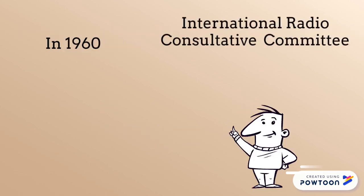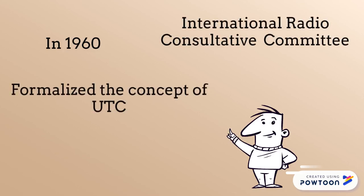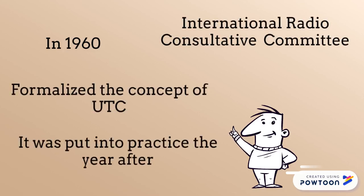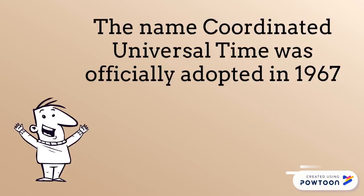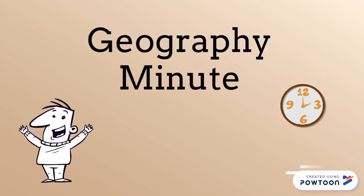In 1960, the International Radio Consultative Committee formalized the concept of UTC, and it was put into practice the year after. The name Coordinated Universal Time was officially adopted in 1967. I hope this helps — that's your Geography Minute.